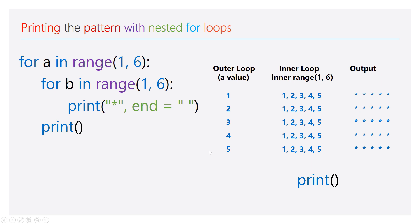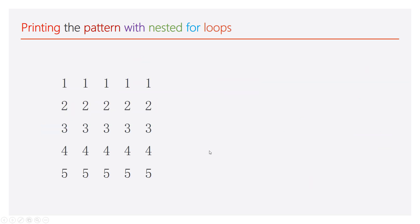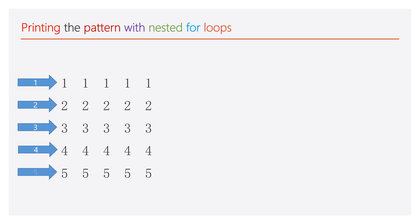Similarly, we will try to print one more pattern. This pattern is a bit different — even though it is a square pattern, in the first line you have all 1s, second line all 2s, third line all 3s, fourth line all 4s, and fifth line all 5s. Count the number of rows — there are 5 — and the number of columns — also 5. You need to take a nested for loop.